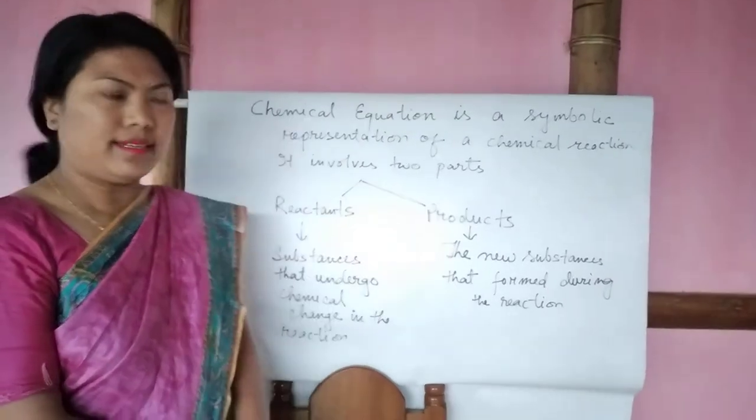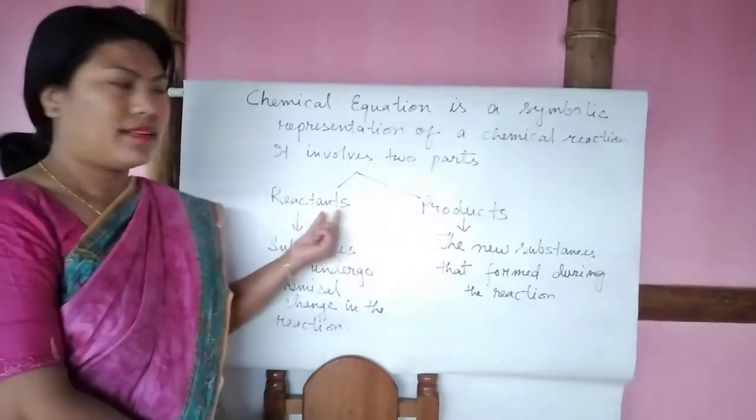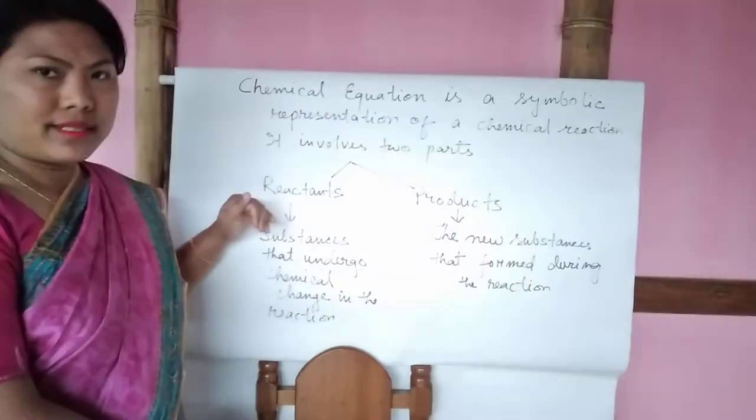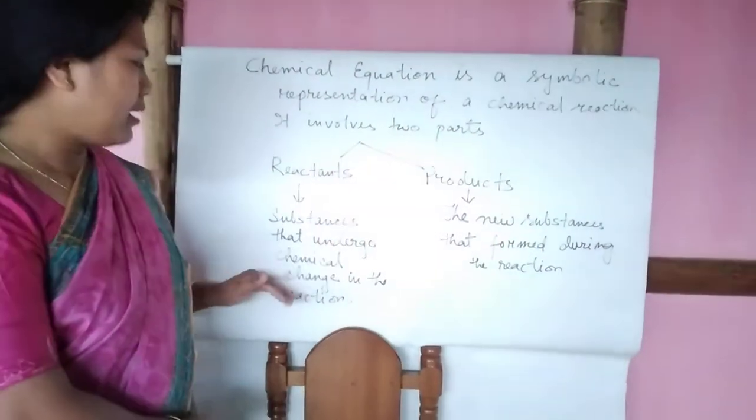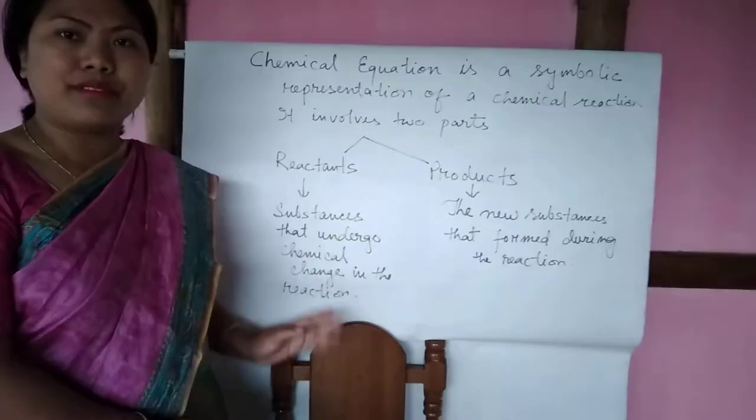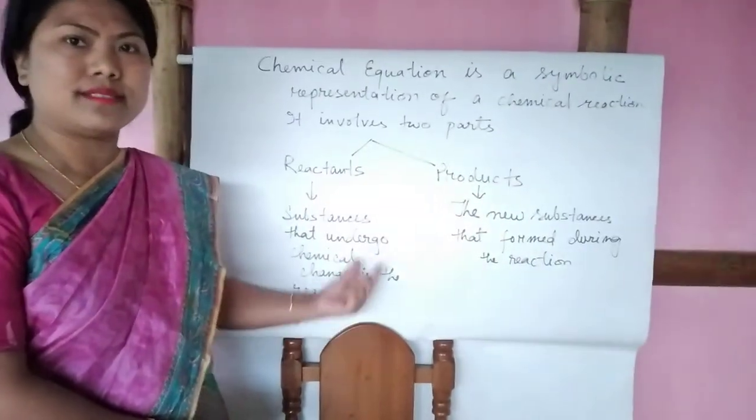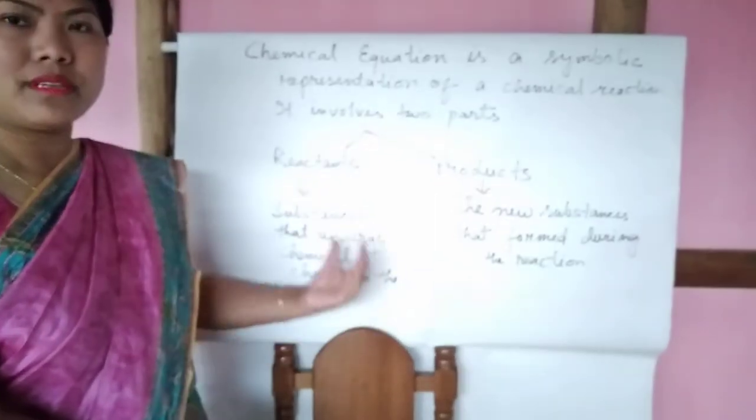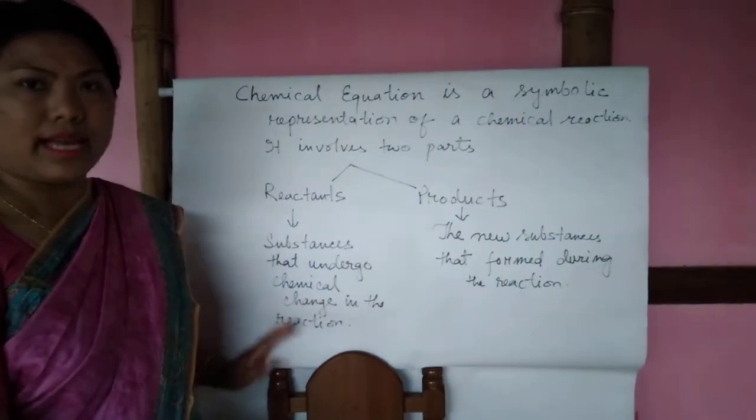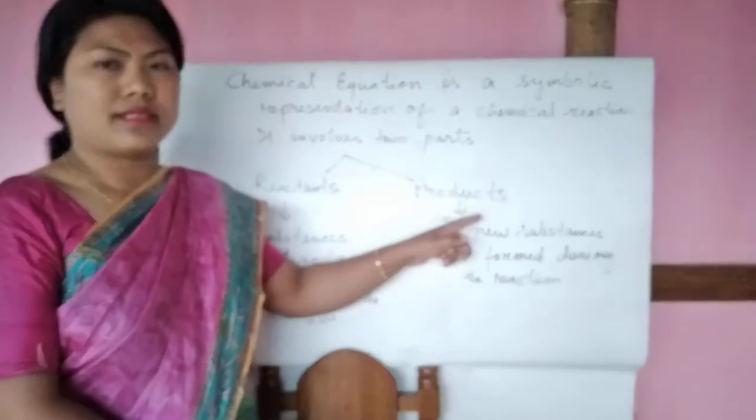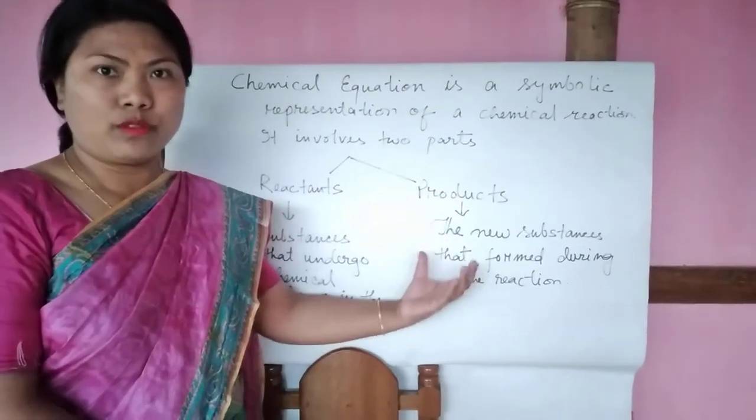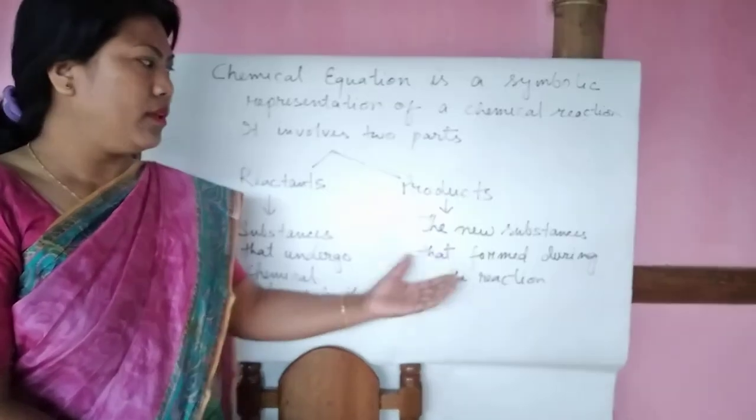In a chemical equation, you will find two parts: a reactant part and products. Reactants are those substances that undergo chemical change in the reaction, and they are written on the left-hand side. Products are those newly formed substances, called products.